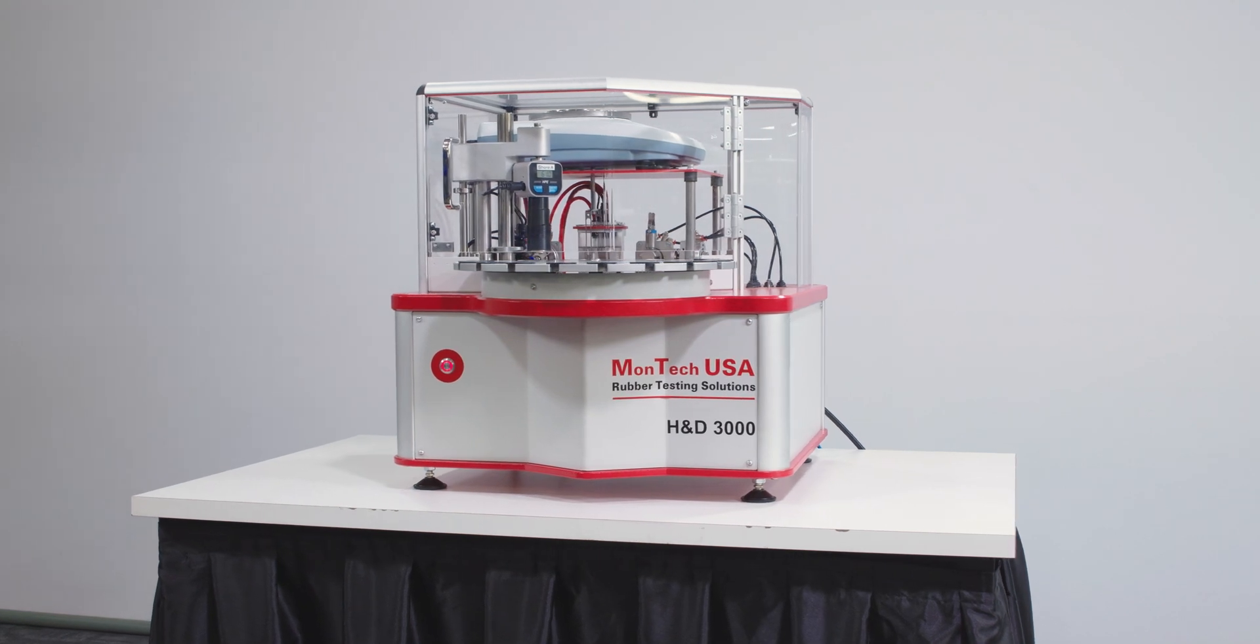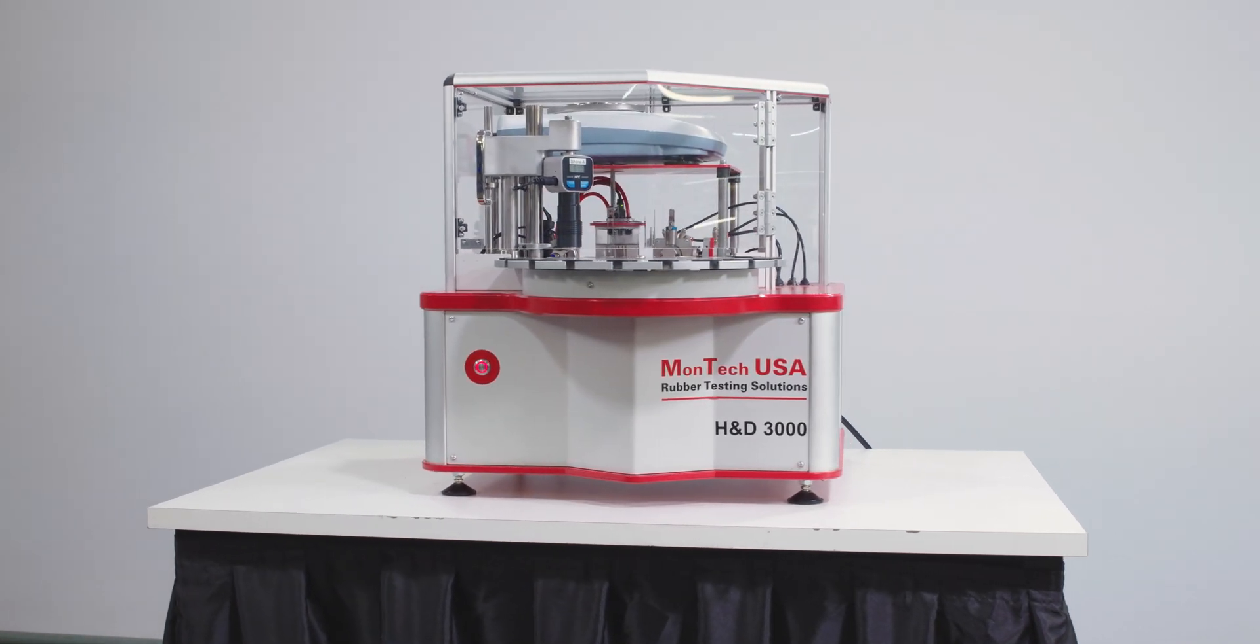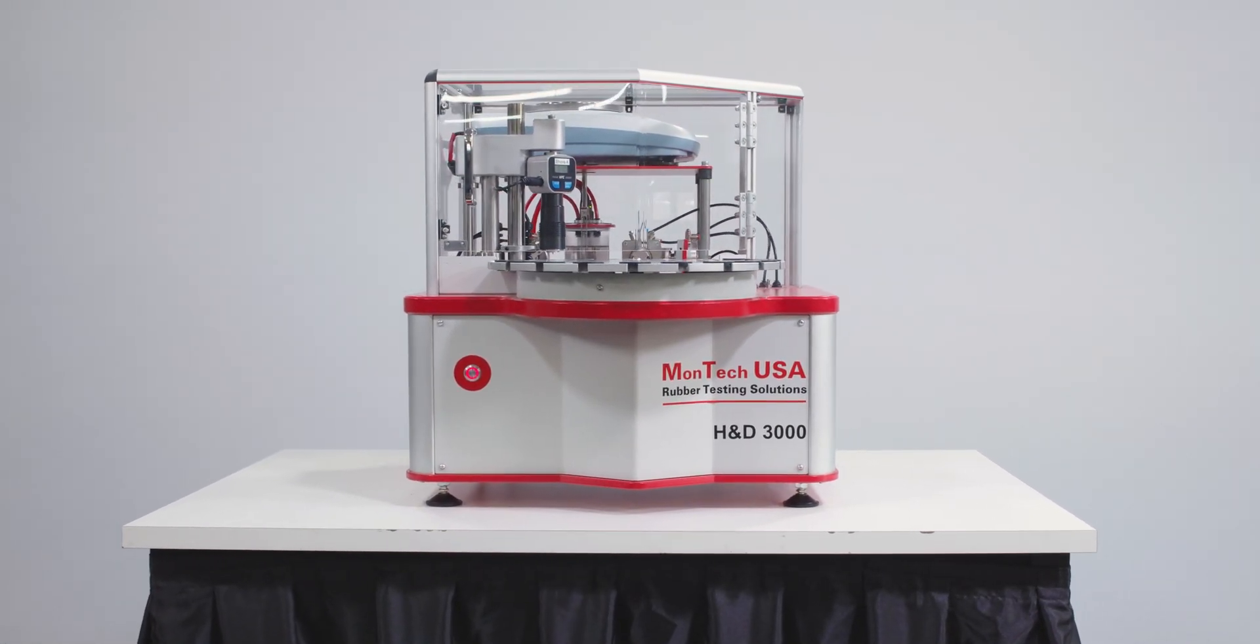Montec's H&D 3000 is two instruments in one, testing both the hardness and the density of cured rubber samples.